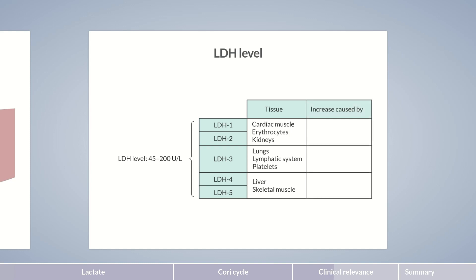Depending on the cause, different isoenzymes are affected. An increase in LDH1 and LDH2 suggests myocardial infarction, myocarditis, hemolysis, or renal infarction. In contrast, increased LDH3 points to pulmonary embolism or platelet destruction. Elevated serum LDH4 and LDH5 are mainly found in liver disease or skeletal muscle injury.